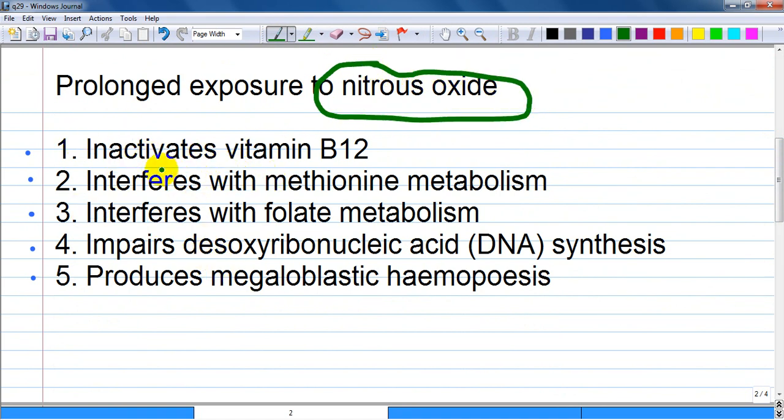All of them are correct. Inactivates vitamin B12, interferes with methionine metabolism, interferes with folate metabolism, impairs deoxyribonucleic acid or DNA synthesis, and produces megaloblastic hematopoiesis, especially anemia, megaloblastic anemia.